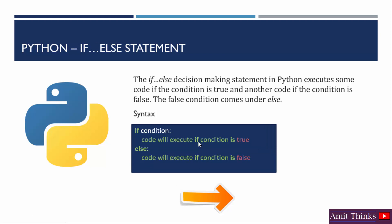Then comes the if-else statement. In the if-else statement, if the condition is true, the first line will get executed. But if the condition is false, we have else, and the following line will get executed. For example, if age is greater than 18, the candidate can vote. If the age is less than 18, it will go under else and print that the candidate cannot vote because the age is less than 18.